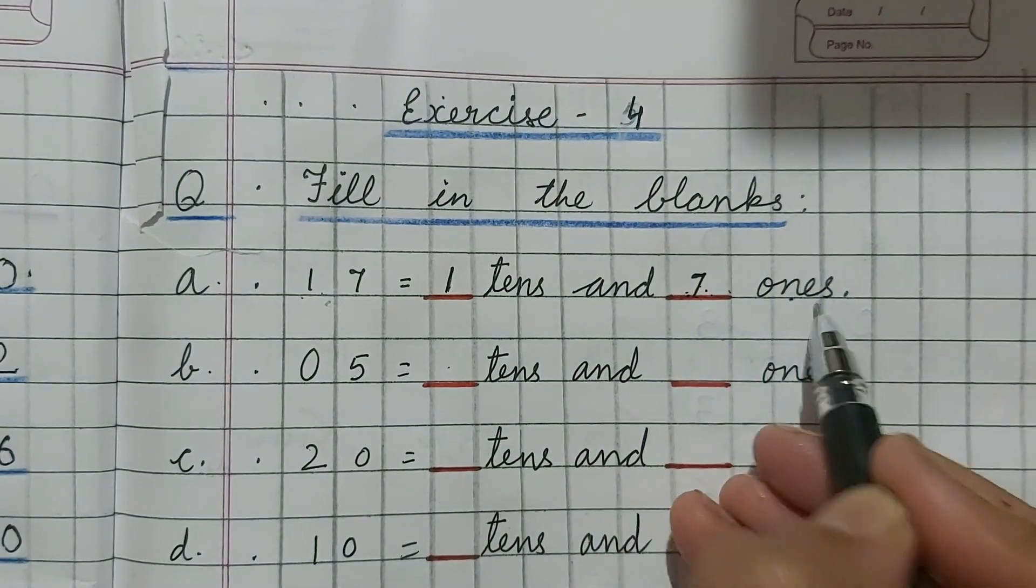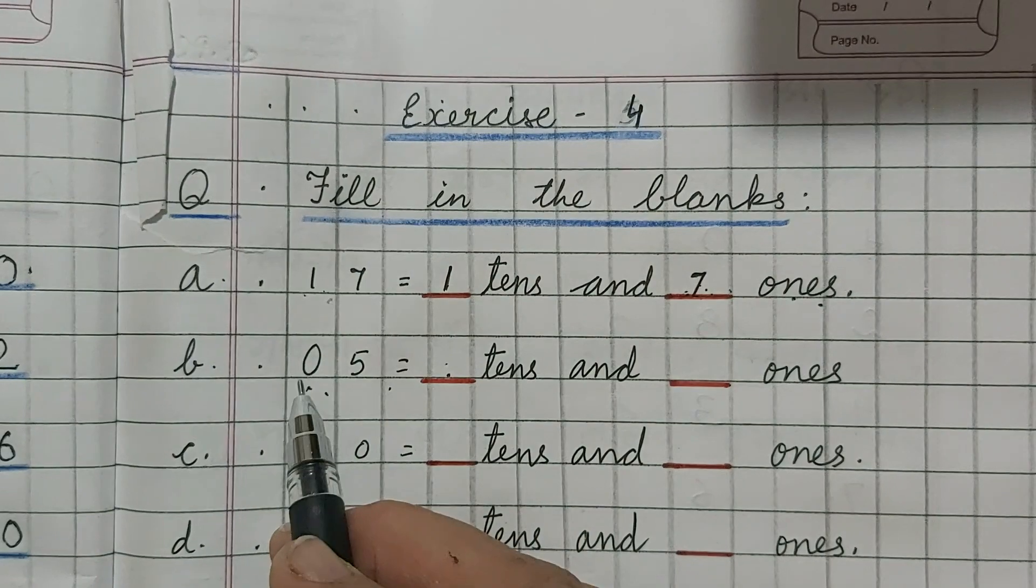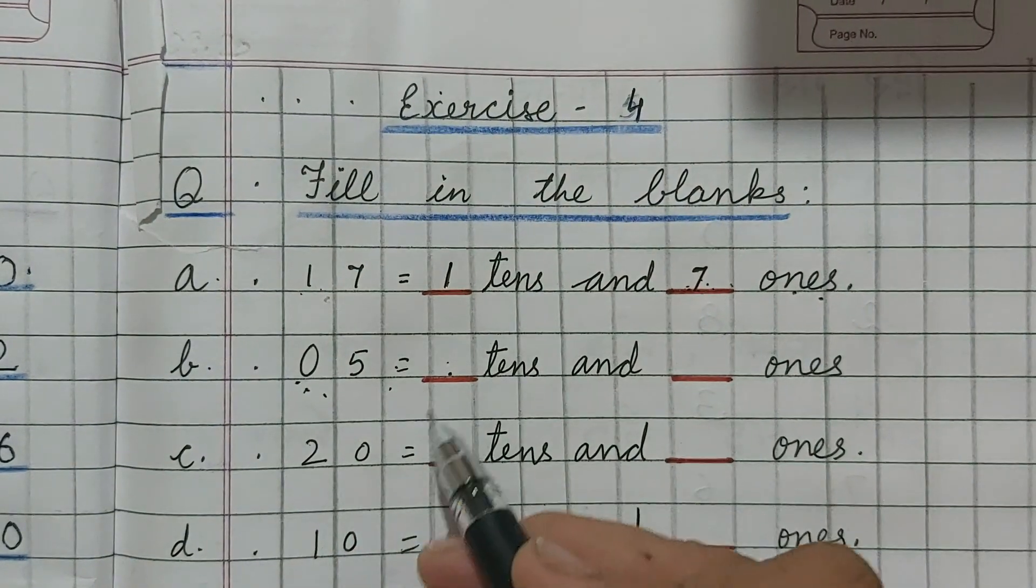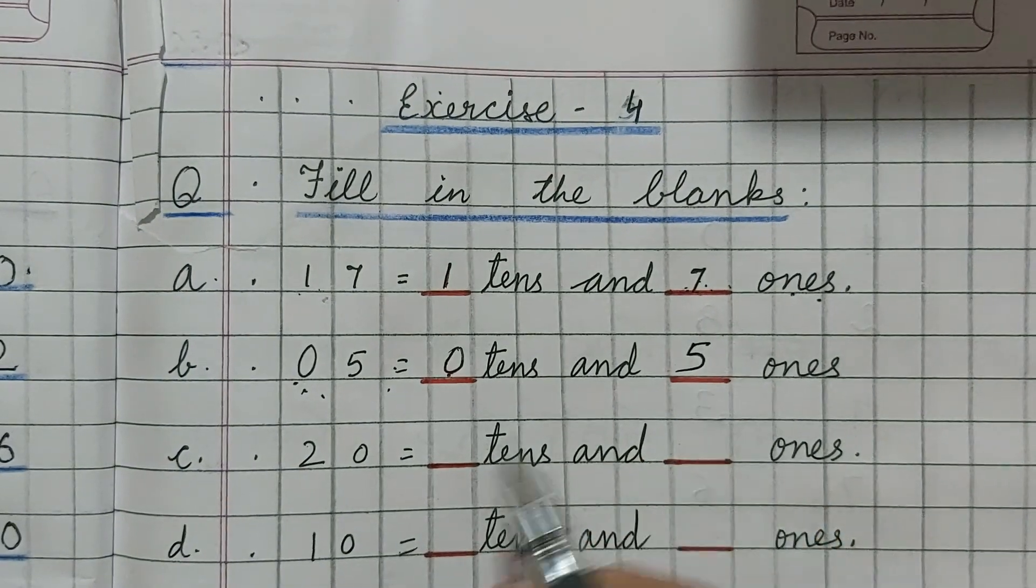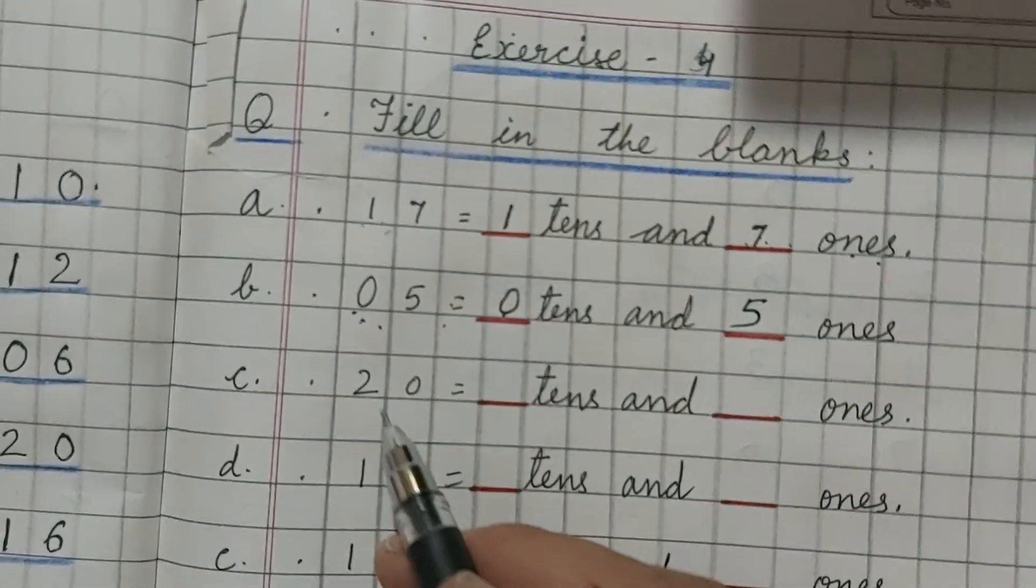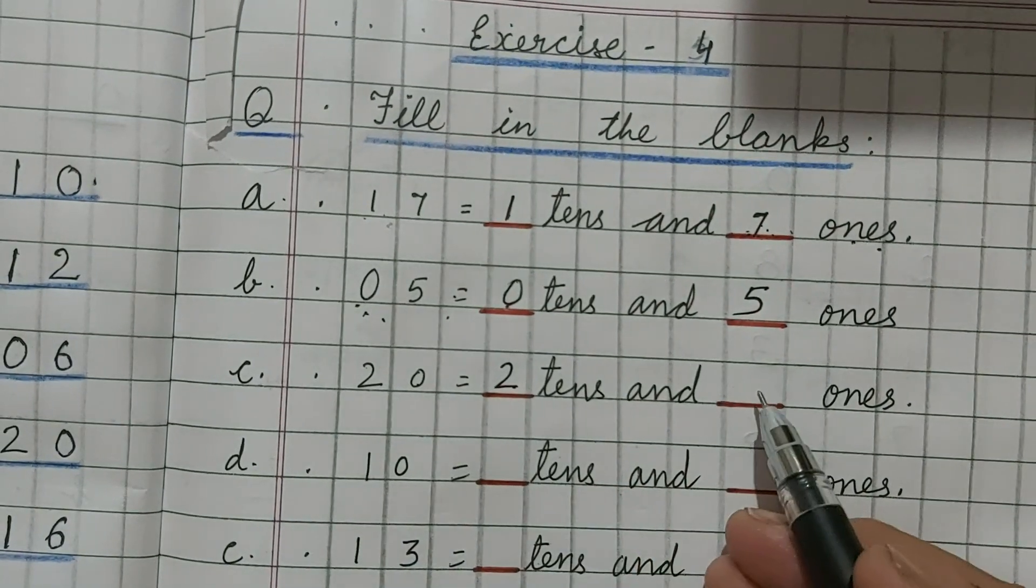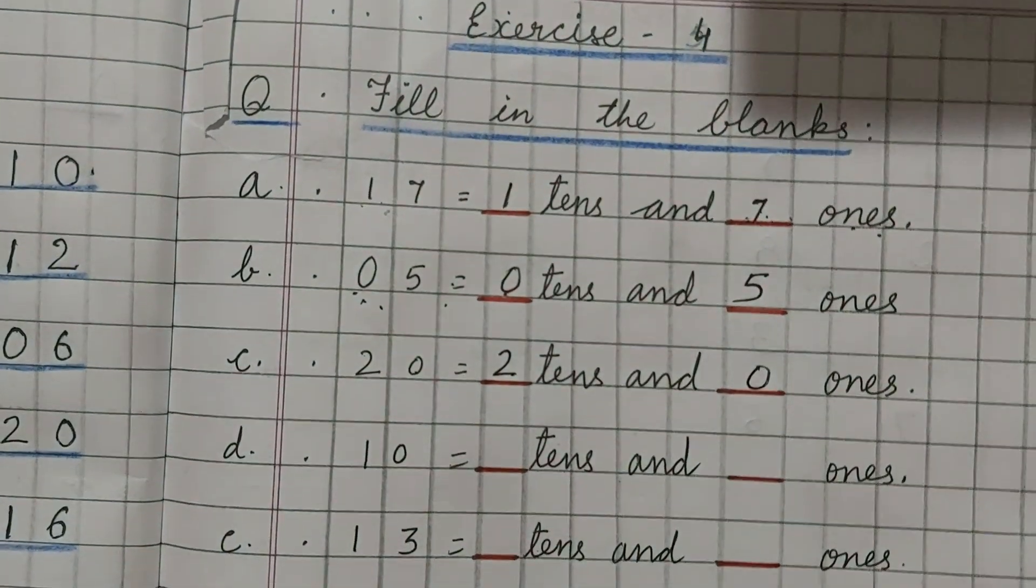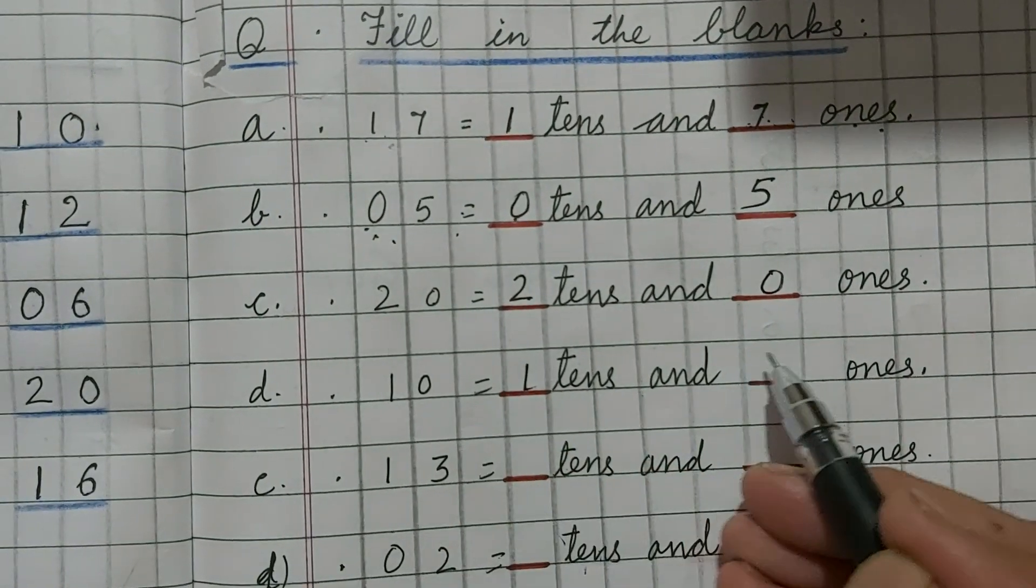05. 0 tens. 05 means 0 tens. And this 5 will come here 5 ones. 20. 2 tens. And this 0 will come before ones. 0 ones. 10. 1 ten. And 0 ones.